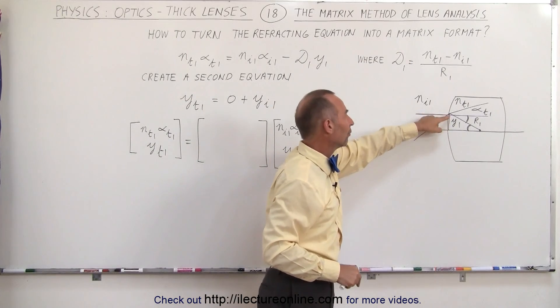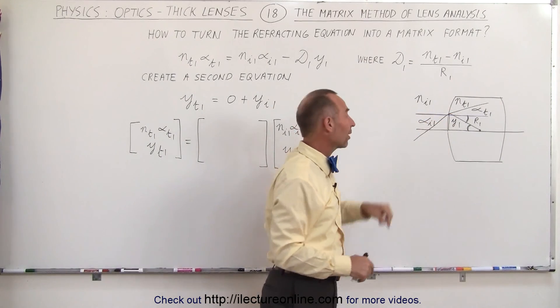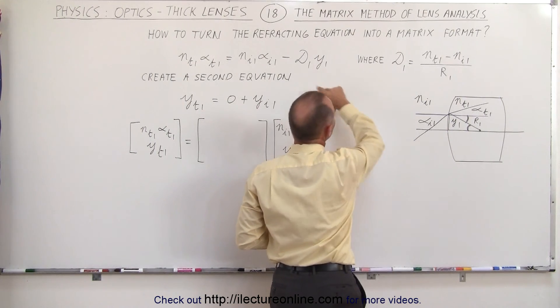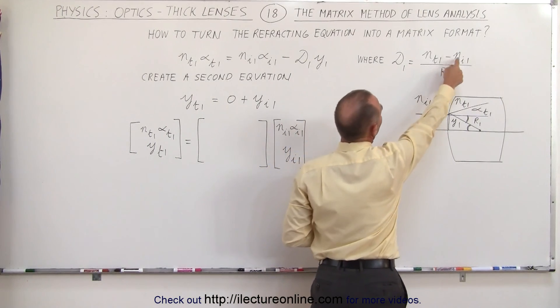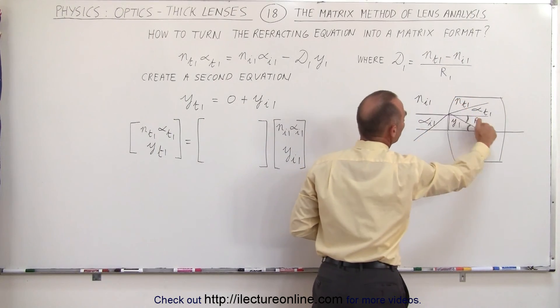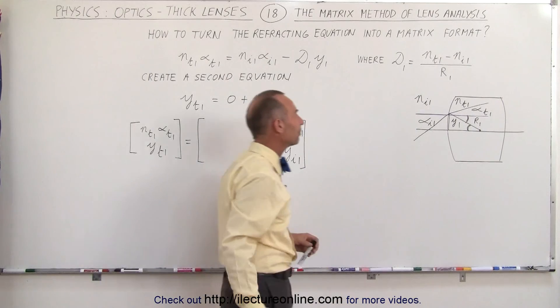y1 being the height of the point where you transition across the boundary above the optical axis and d1 is the power of the refracting surface defined by the difference in the index of refraction across the boundary divided by the radius of curvature of that boundary.